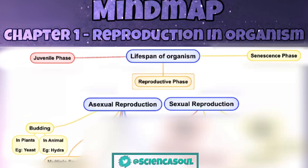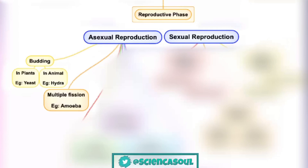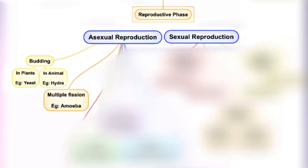Examples of budding include bacteria, yeast, coral, Hydra, and jellyfish. The second type is multiple fission — for example, in amoeba. Multiple fission is the process of asexual reproduction in which, instead of two daughter cells, many daughter cells are produced from a single parent cell. Examples include sporozoans and algae.